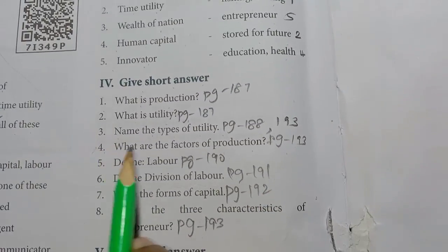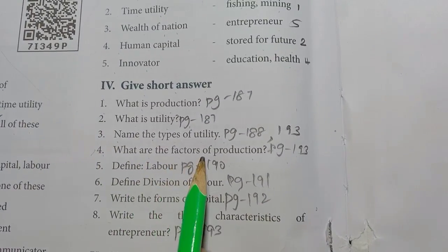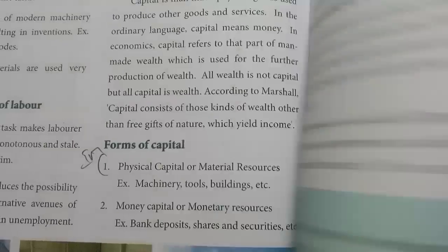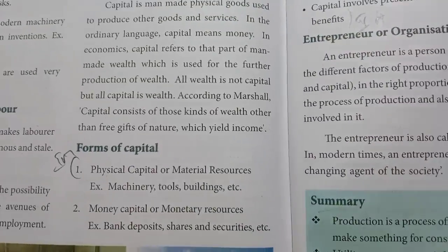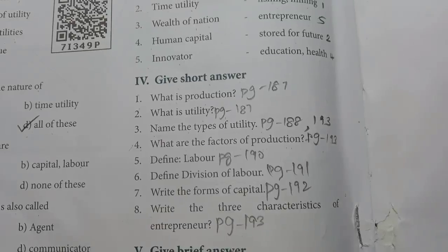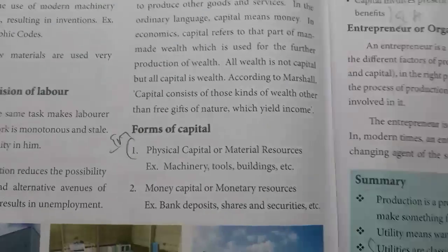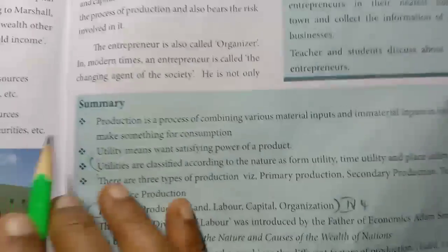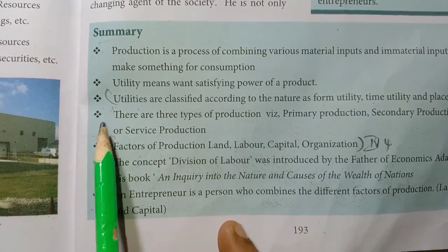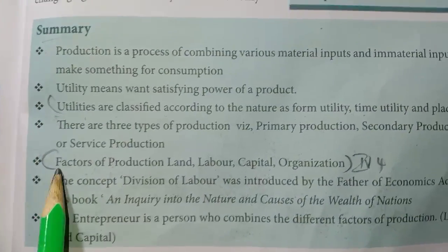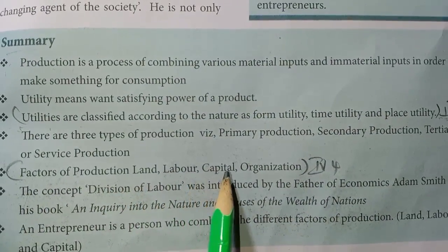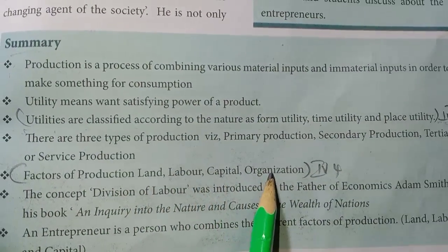Fourth one: What are the Factors of Production? Page No. 193, under the summary, points 1 through 5. Factors of Production are: Land, Labour, Capital, and Organization.